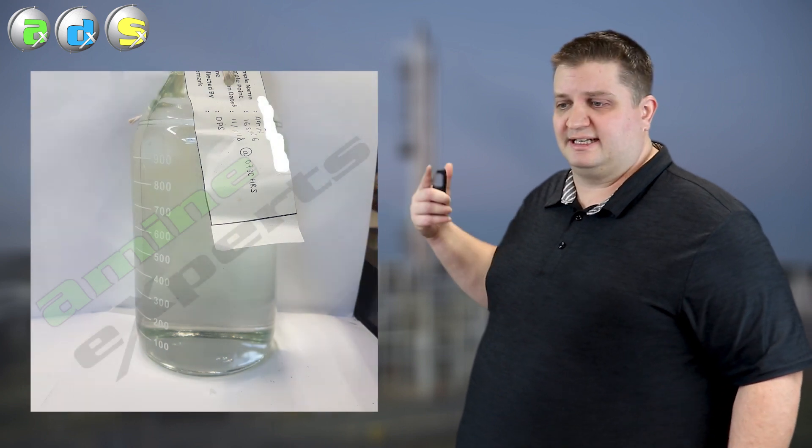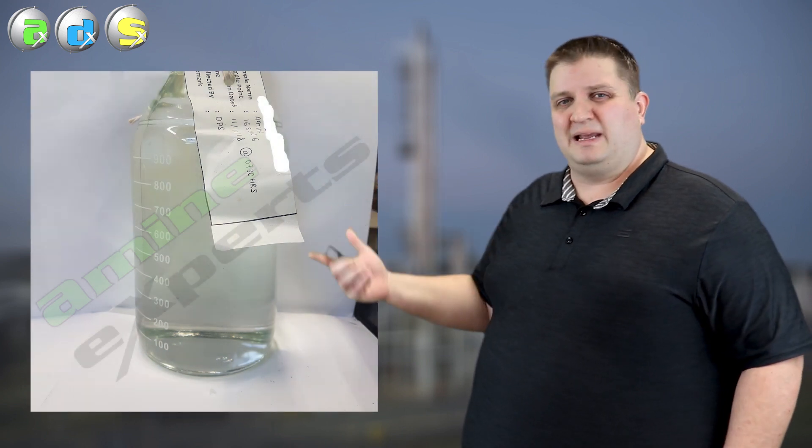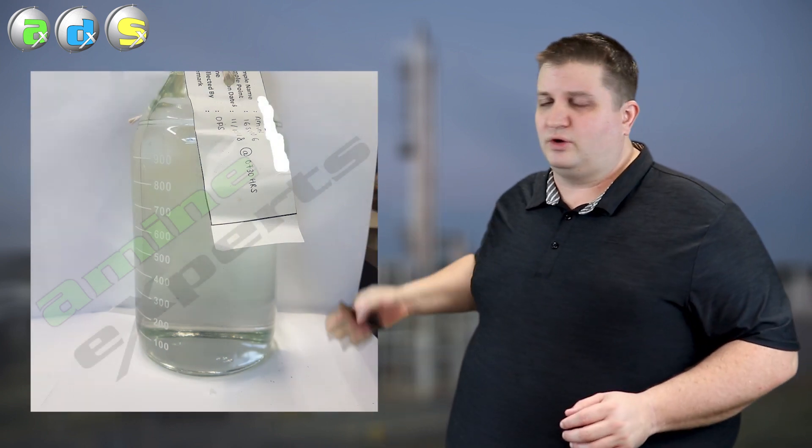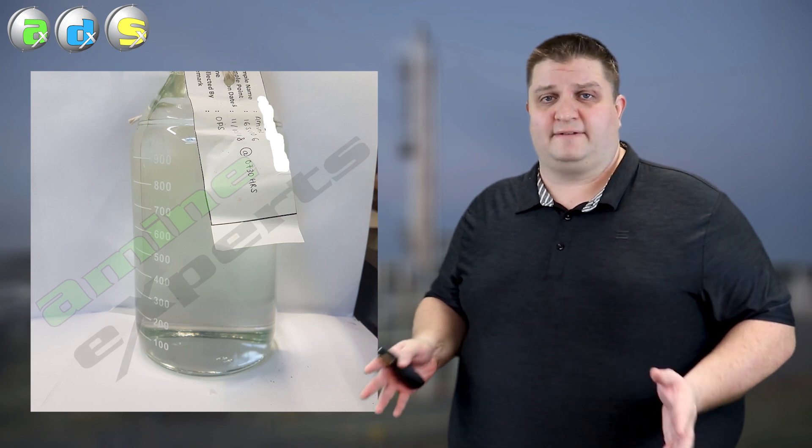Once you get that sample there's two types of analysis we can look at. There's the on-site testing and there's the off-site analysis in which you're going to get a full look at your amine. On-site the very first thing we're going to look at once we have that sample is what does it look like. What you hopefully are going to see is this right here, a nice clear amine, maybe a slight tea-ish color but overall everything looks quite fine.